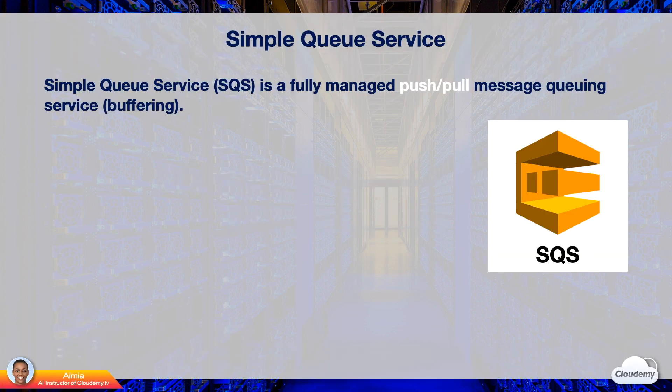SQS, Simple Queue Service, is one of the oldest AWS offerings. SQS is a fully managed, push and pull, message queuing service that enables you to decouple and scale microservices, distributed systems, and serverless applications. A message queue is like message buffering, where you can buffer background tasks.